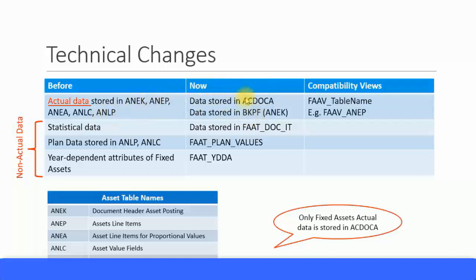There are always compatibility views for any program pointing to the old tables, which ensure it points to the AKDOCA table. These compatibility views are named FAAV — FA is likely for fixed assets — followed by an underscore and the table name. For example, if a program points to the ANEP table, the compatibility view is called FAAV_ANEP.